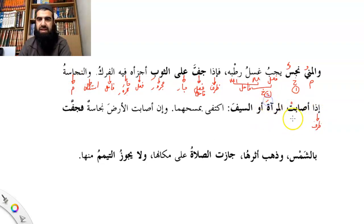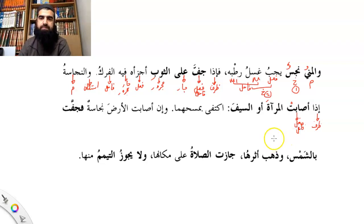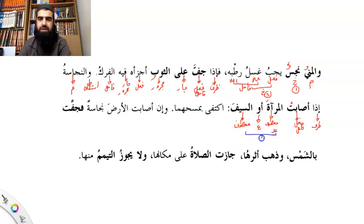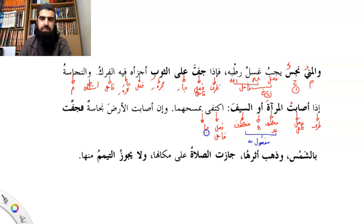Al-najasatuh is the mubtada. Iza is the zharf. Azaabat is the fi'al plus the fa'il — because the fa'il is najasa, which is feminine. Al-mirata is the maf'ul bihi. Wao is ataf. As-saif, the sword, is also the maf'ul bihi — it's ma'atuf, and the ma'atuf alayhi becomes the maf'ul bihi. Next: iqtafi is the fi'al plus the fa'il. Bi is jar. Mashi is mudaf; huma is mudaf ilayhi, making it the majroor.